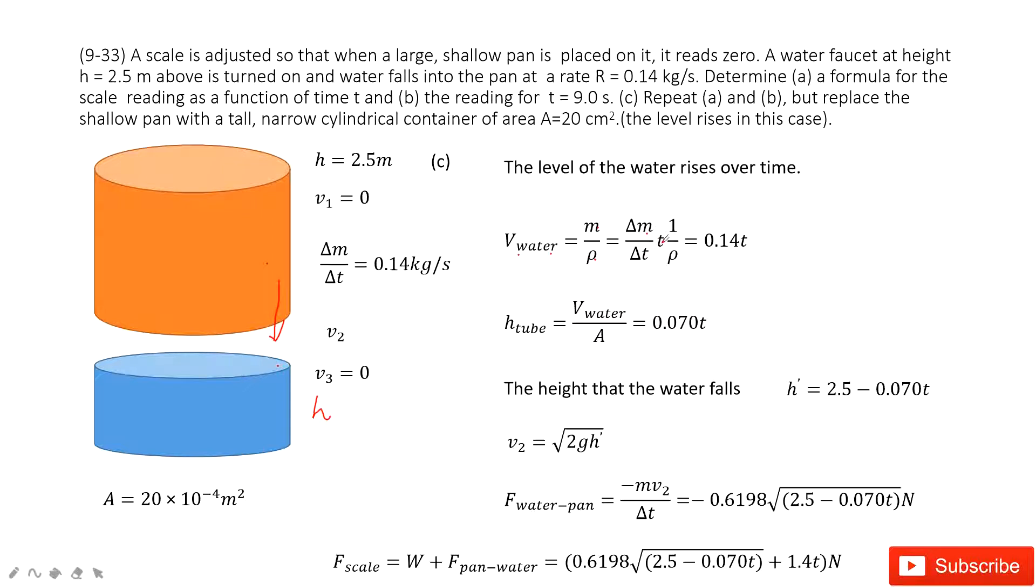So at time t, we can get 0.14 times t and 1 over ρ. This is density. Density for water is 1, so finally we can get the answer for volume of the water, this one.